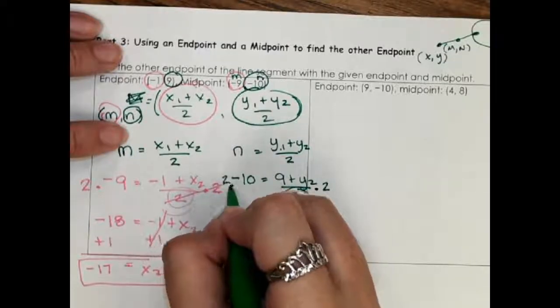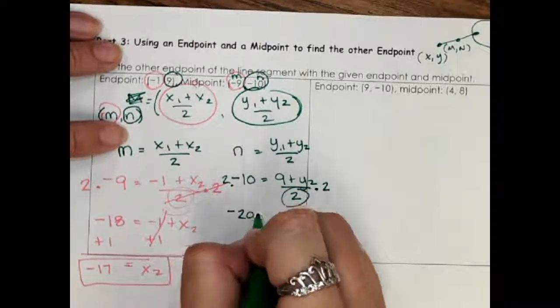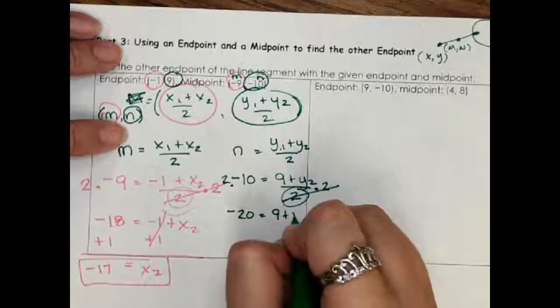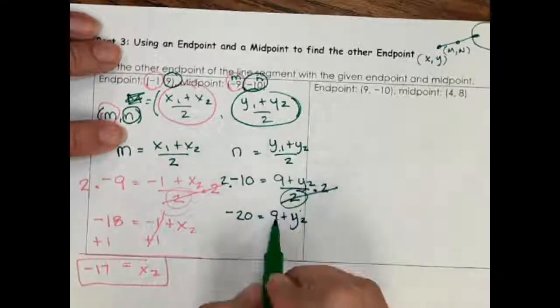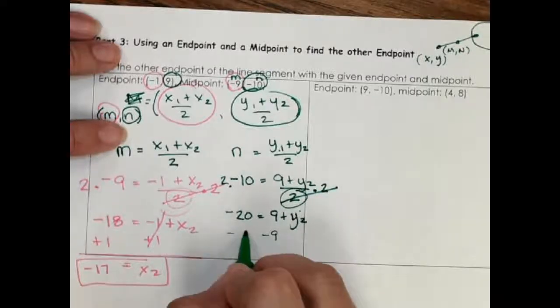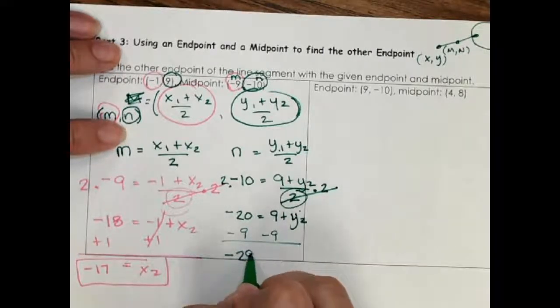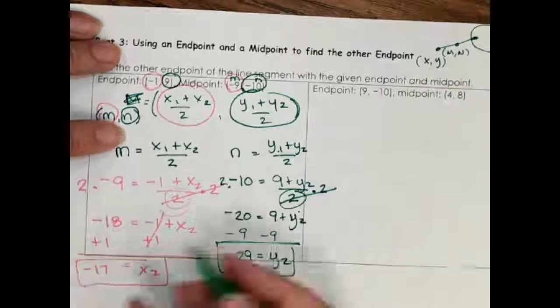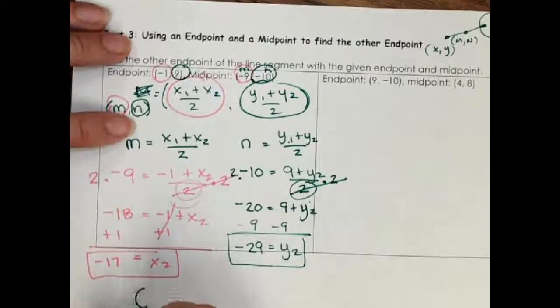Two times negative 10, two over two cancels. Then finish solving the algebra problem. Your last step is to write this out as a point. So this is negative 17, negative 29.